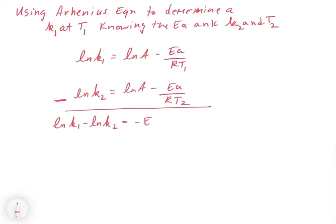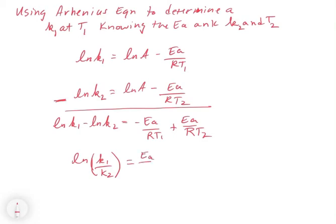What we get is minus Ea over RT1, and then plus — because minus a minus is a plus — Ea over RT2. If we reorganize, we get ln(k1/k2) — because subtraction of logs brings k2 to the denominator. On the right side, we factor out Ea over R, giving us (1/T2 minus 1/T1). This is the form of the Arrhenius equation that allows you to go between a temperature and rate constant pair to another temperature-rate constant pair.